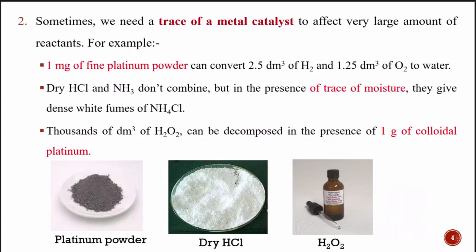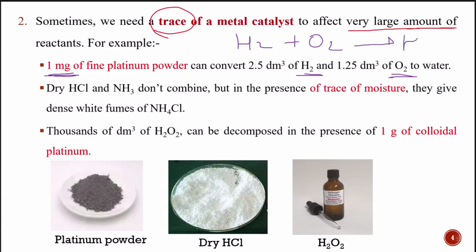Next, sometimes we need only a trace amount of catalyst. For example, just 1 mg of fine platinum powder can convert H2 and O2 into water: 2H2 + O2 → 2H2O. Just 1 mg of fine platinum is required for this reaction.